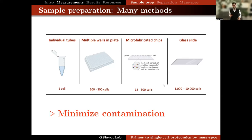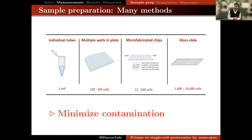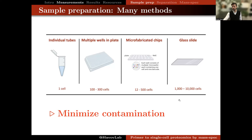One thing in common for all of these approaches is that sample preparation for single-cell proteomics must minimize contamination. Mass spec instruments are exquisitely sensitive, and there are many contaminants in the environment that are relatively low in bulk samples but are highly abundant compared to proteins from a single cell. All of these methods try to minimize contamination by using only mass spec-compatible reagents and minimizing volumes.